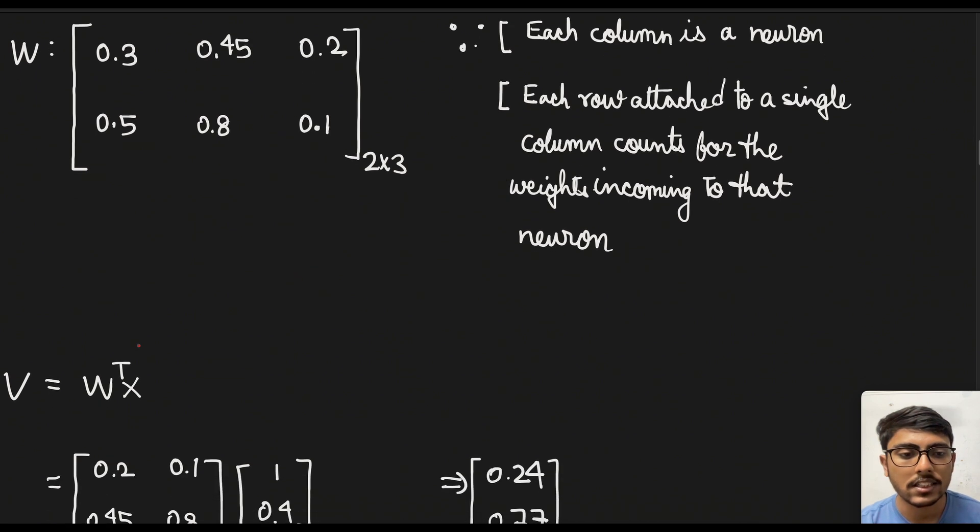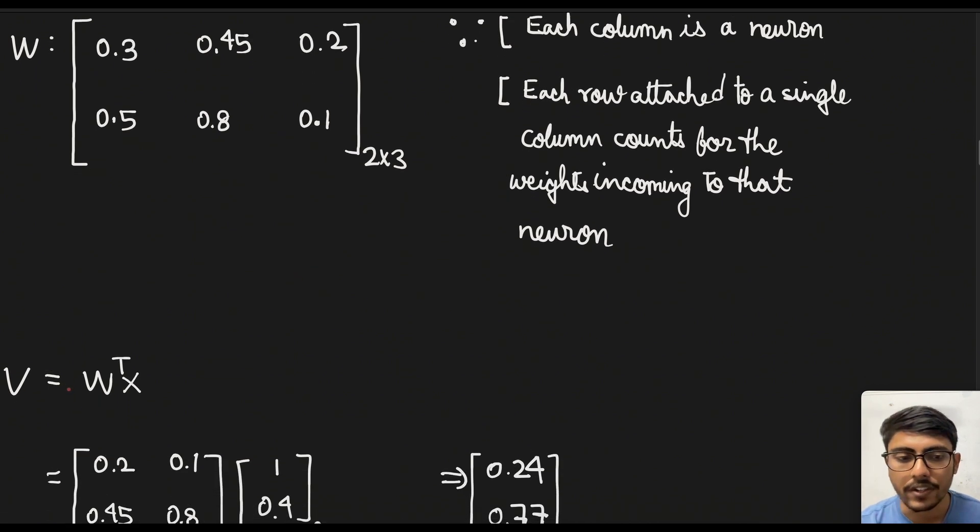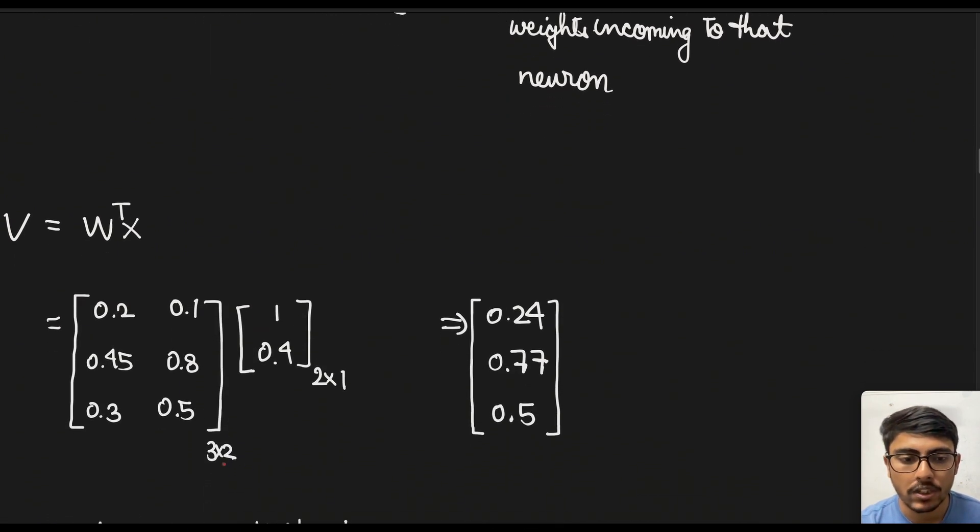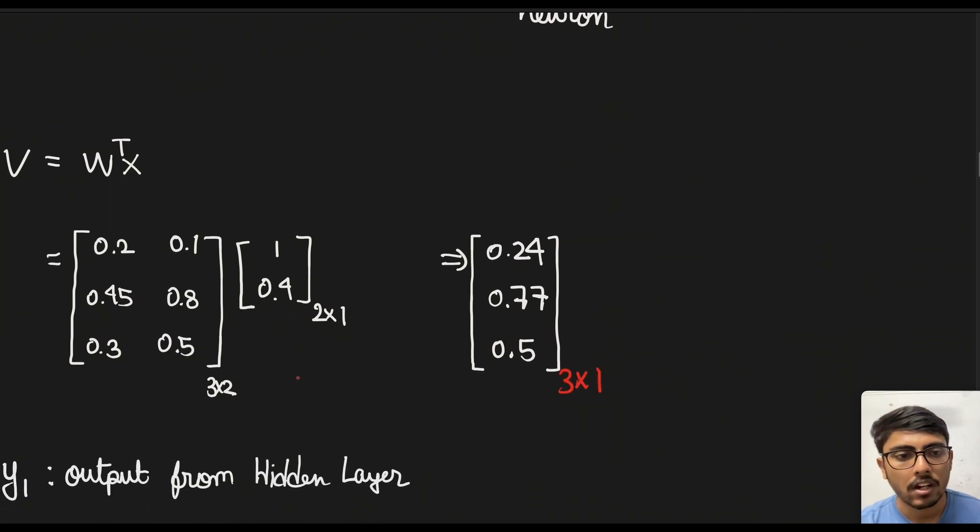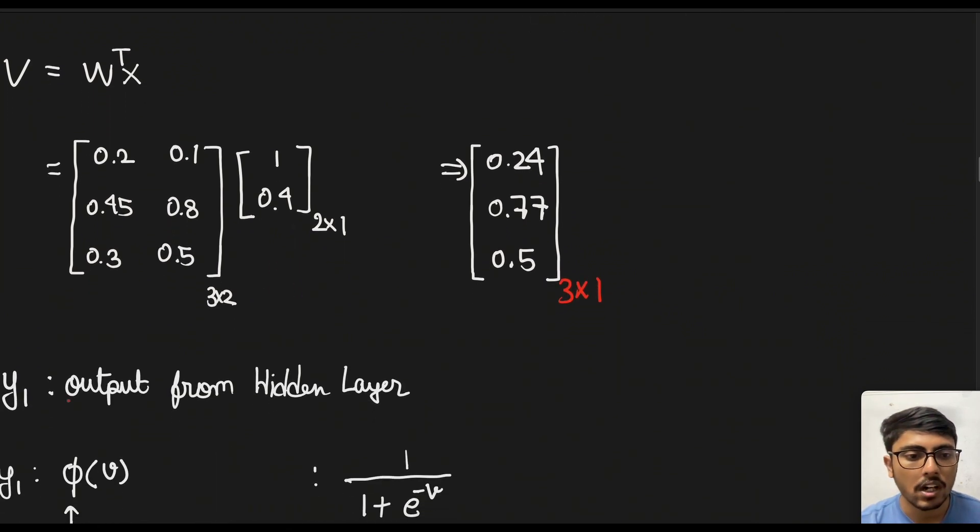So that's how we create this matrix. Now the next thing is calculating the induced field. So we multiply it. We see that these matrices are basically appropriate to be multiplied with each other. So they will result in a 3 × 1 matrix. Now if we go to the output for the hidden layer, so this was the induced field.